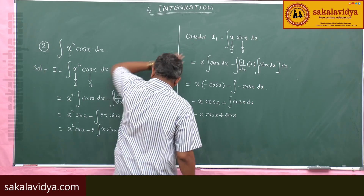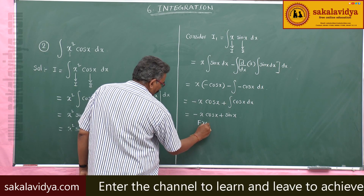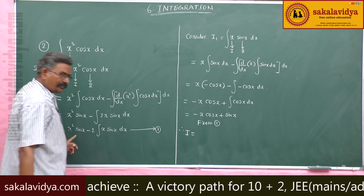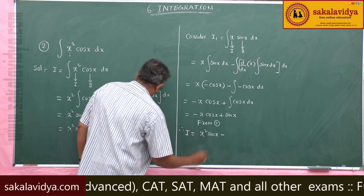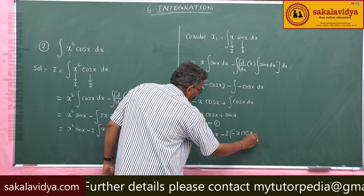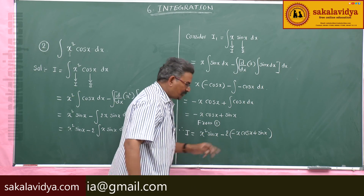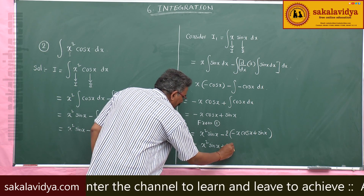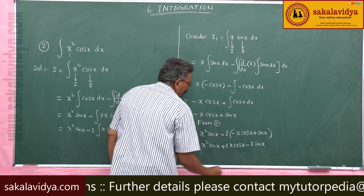Substituting this value back into equation 1, the required integral I equals x²·sin x minus 2·(−x·cos x + sin x). Multiplying each term by −2, this becomes x²·sin x + 2x·cos x − 2·sin x plus the constant of integration.